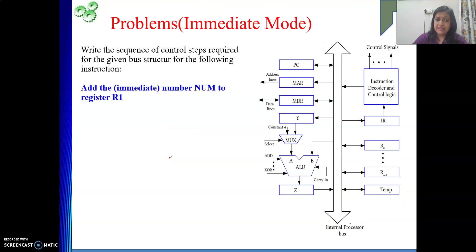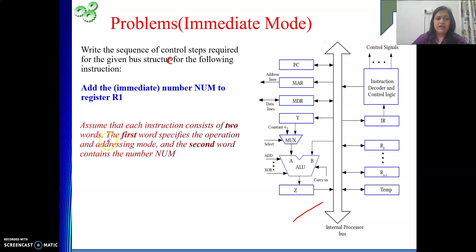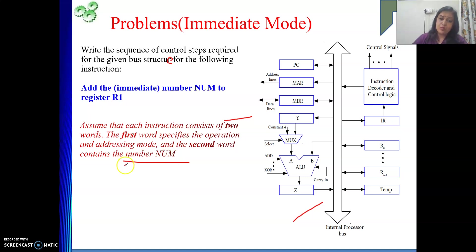Next we will see the same addressing mode, but with a different assumption. The question says: write the sequence of control steps for the given bus structure for the following instruction — add the immediate number 'num' to register R1. Same example, but one more assumption is given: each instruction consists of two words. The first word specifies the operation code, addressing mode, and so on. The second word contains the number 'num'. So 'num' is in the second word. To get this immediate data, we need to perform one more memory operation as part of instruction fetch and decode, before proceeding with execution.